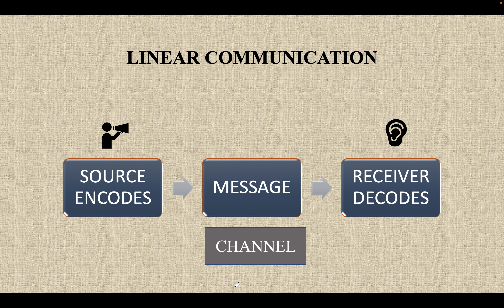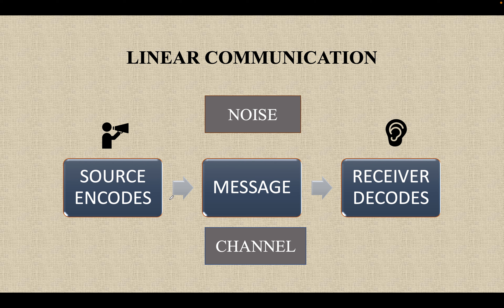In linear communication, there is a sender of the message — he is a source who wants to send a message. What he does is he sends a message via a channel. And never forget that there is also noise around. This noise can be anything — a group of people chatting near you, or the noise of people who are surrounding you.